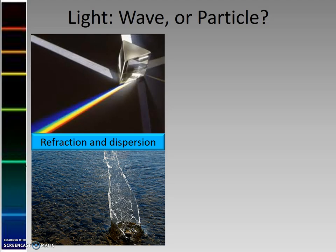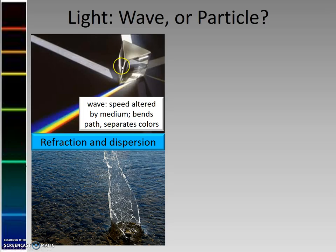In a previous video we said that light has wave properties. Light is a wave, its speed. So when I switch from air to prism, the speed of the light gets altered by the medium, and each color of light is a different speed, so we bend and separate colors.